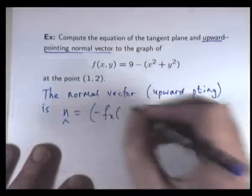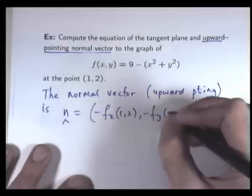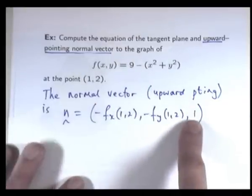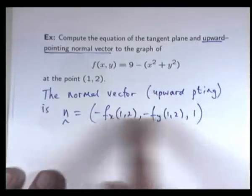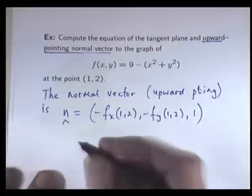It's going to be this form. Note that the k component is positive. And all I really need to do is work out these partial derivatives and evaluate them at our point.